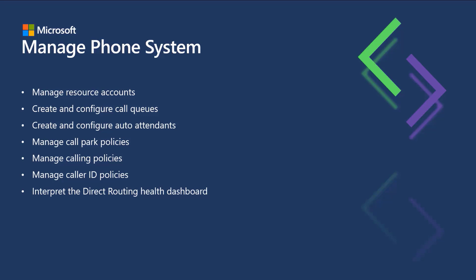And here we are in the final topic of section three — manage phone system. Within this part of the exam, they're going to expect you to understand how to manage resource accounts, how to create and configure call queues, how to create and configure auto attendants, how to manage call park policies, how to manage calling policies, how to manage caller ID policies, and how to interpret the direct routing health dashboard.